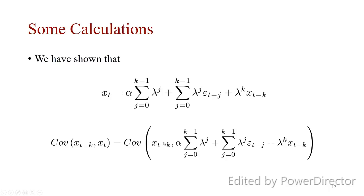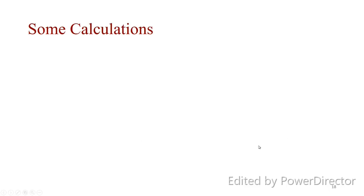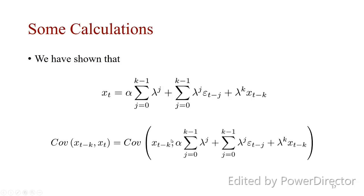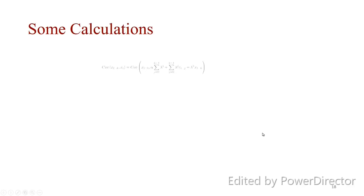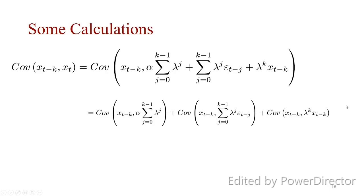The covariance between x_t and any constant is zero, and the covariance between x_t and future error terms is also zero, because all future error terms do not depend on past observations. As we discussed regarding stationarity, the future cannot change the past, but the past can change the future. Therefore, the covariance between x_t and the error terms is zero. We are left with the covariance between x_{t-k} and itself, which equals the variance. The covariance of a variable with a constant is zero, and the covariance between two independent random variables is also zero.